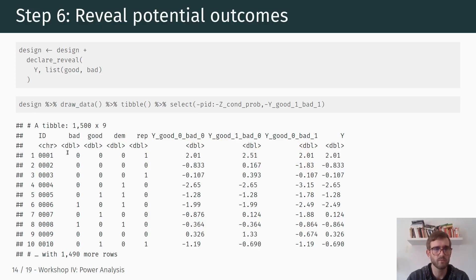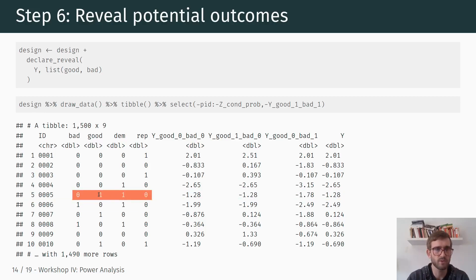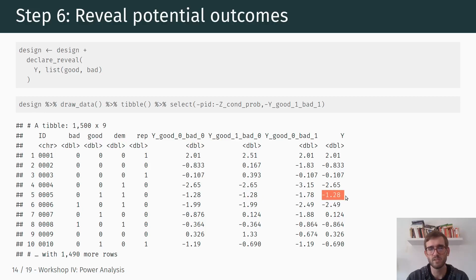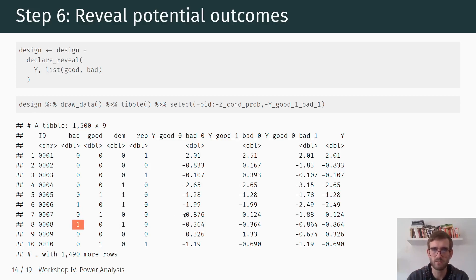For example, the first observation is in the control group and is a Republican, so the realized potential outcome is the control group outcome — that becomes the revealed Y we observe. Another observation is in the positive treatment, so the realized potential outcome is the one where good equals one, and that value is added in the Y column. For respondent 8 who is in the negative framing group, the respective potential outcome is minus 0.864 — so that's the outcome that is realized.